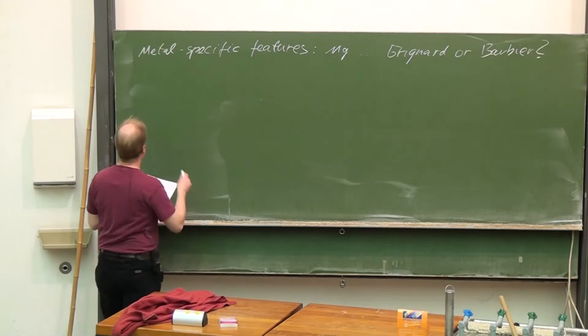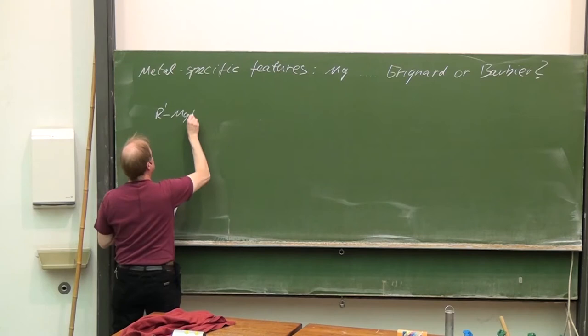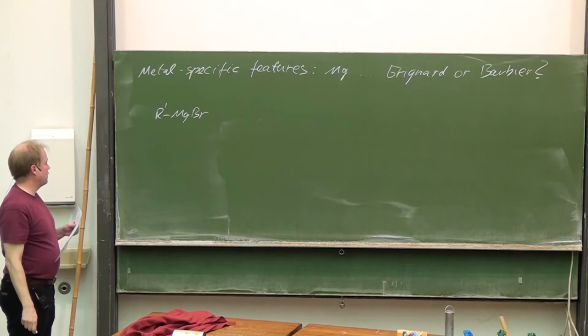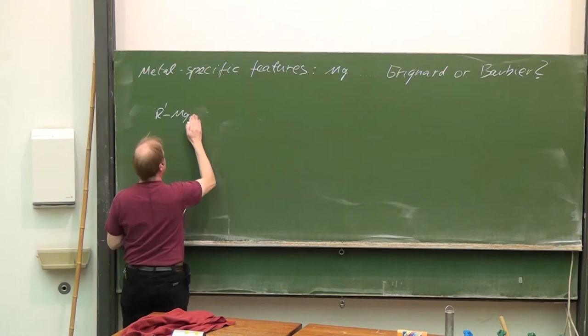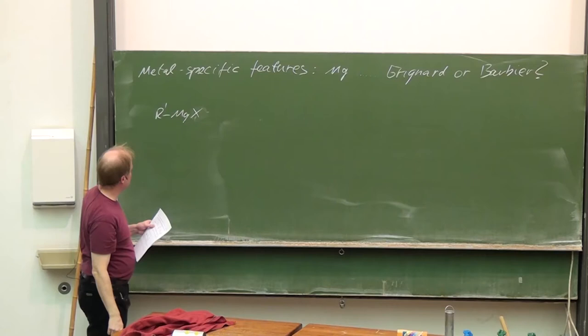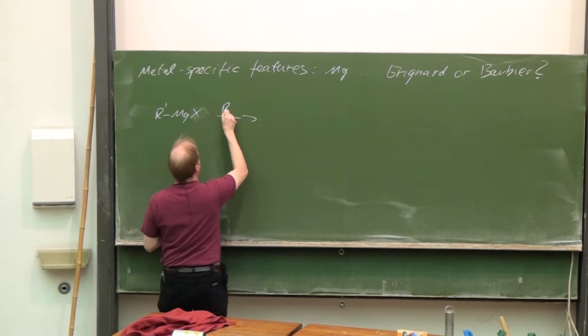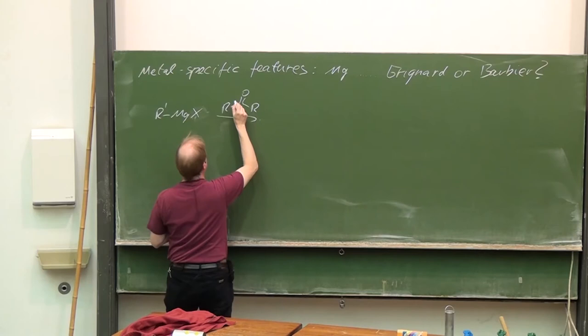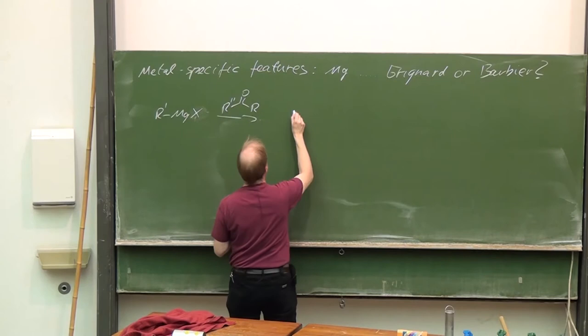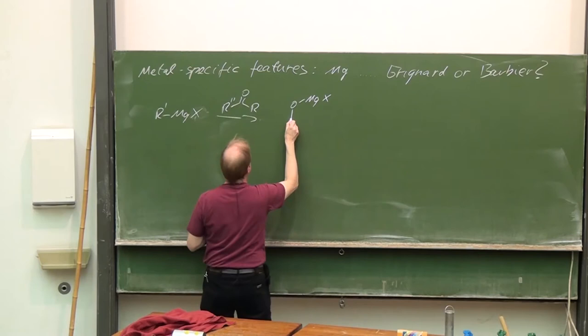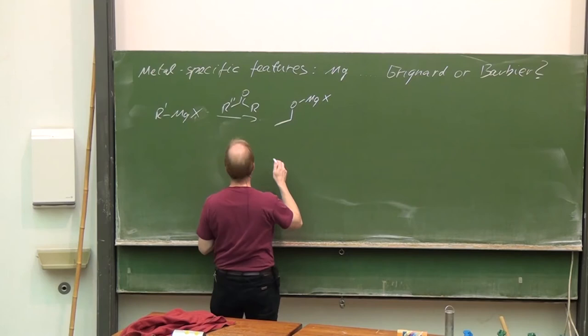The Grignard reaction you of course all know. The general scheme is an alkyl, aryl, or vinyl magnesium halide—therefore better put an X here, normally bromide or chloride—reacts with a carbonyl compound.